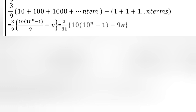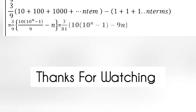= (3/9)[10(10^n - 1)/9 - n] = (3/81)[10(10^n - 1) - 9n].